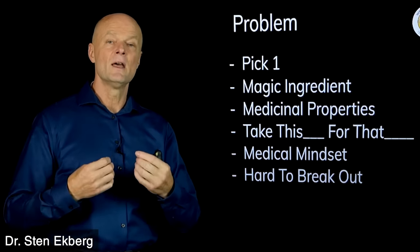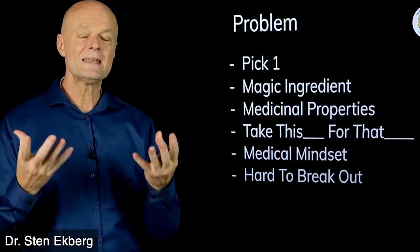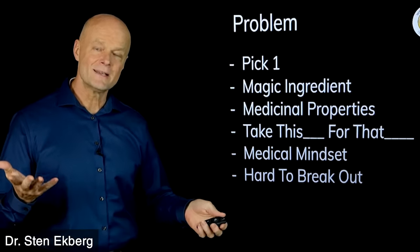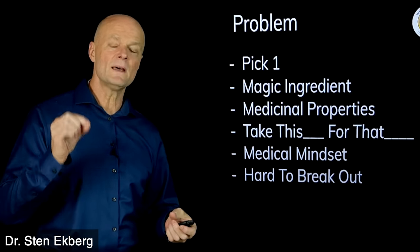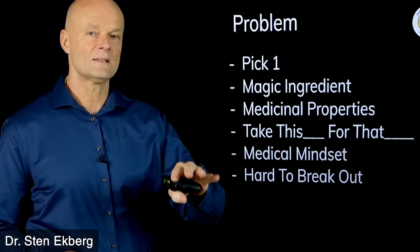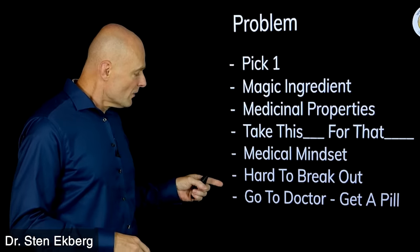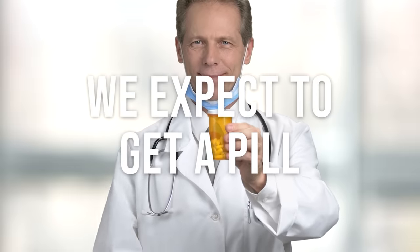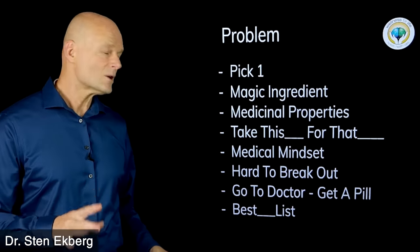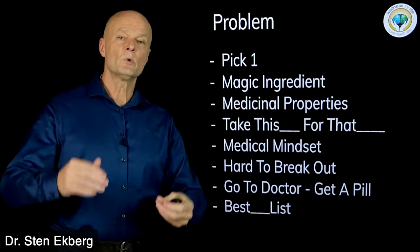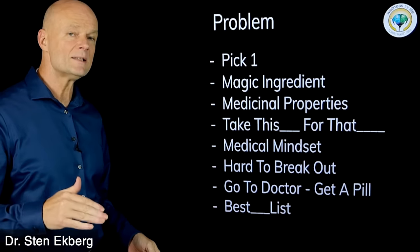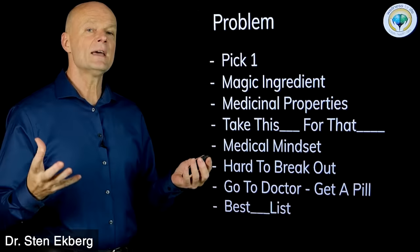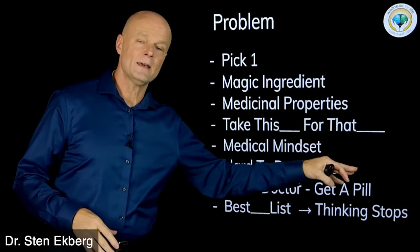We need to stop thinking in terms of 'take this for that' and instead start asking what helps the body, what does the body need to have, and what interferes with the body. The problem with this thinking is that whenever we just want a list, we never get the full picture. We stop thinking and people are looking for quick fixes and shortcuts.